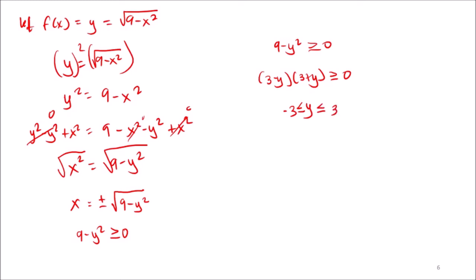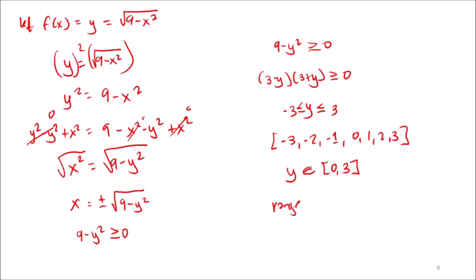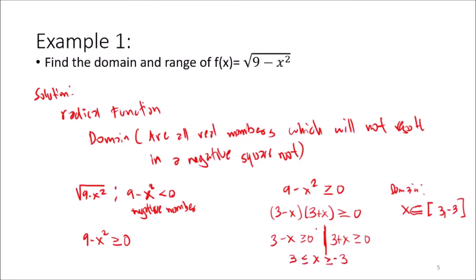However, since our function uses a square root, we only consider the positive values. Listing values from -3 to 3 and keeping only non-negative ones gives us 0, 1, 2, and 3. So our range is y ∈ [0, 3], meaning the range of the function is from 0 to 3.